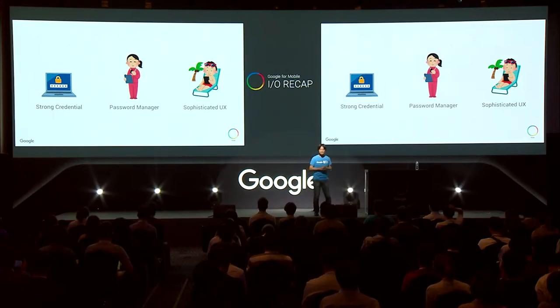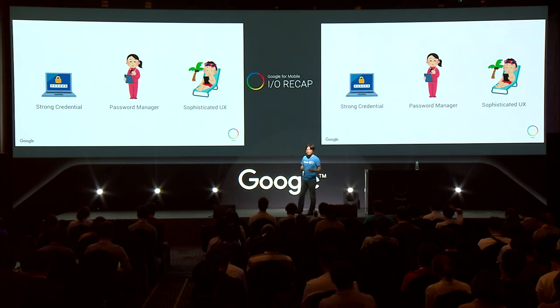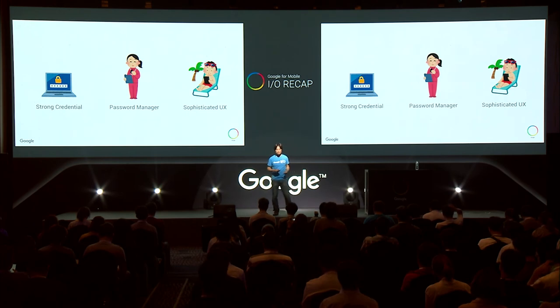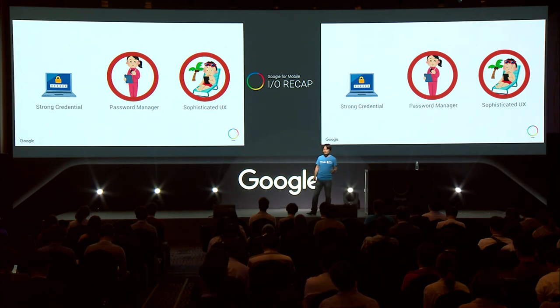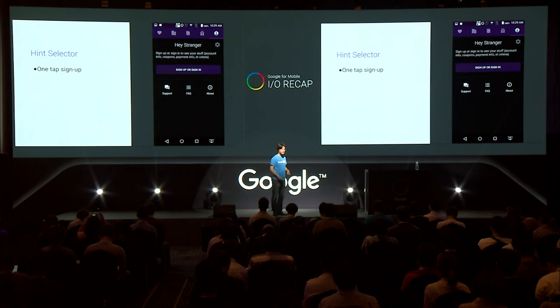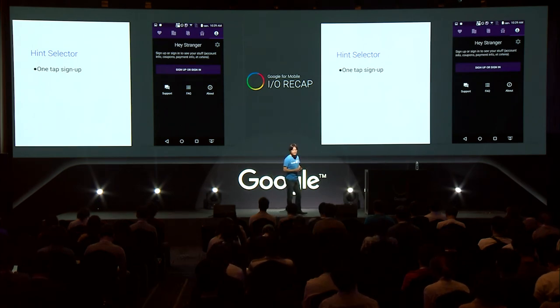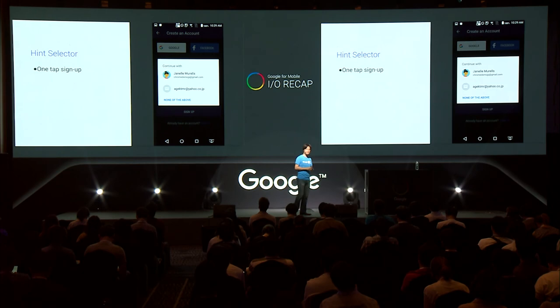So far I've covered the Credential Management API and Smart Lock for Password. These features address two out of three requirements for good authentication: password manager assistance and sophisticated user experience. But what about strong credentials? That part still remains. That's why we are working on a new API called the sign-up API.